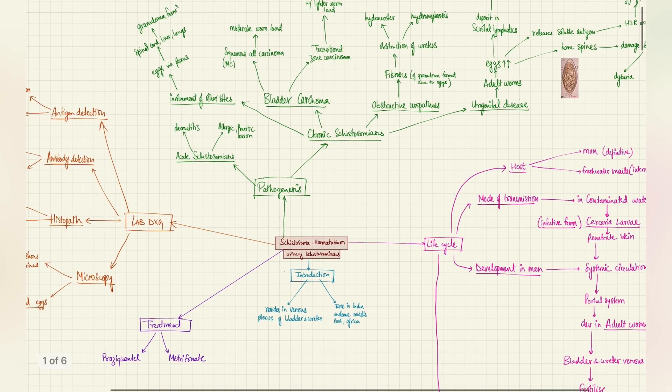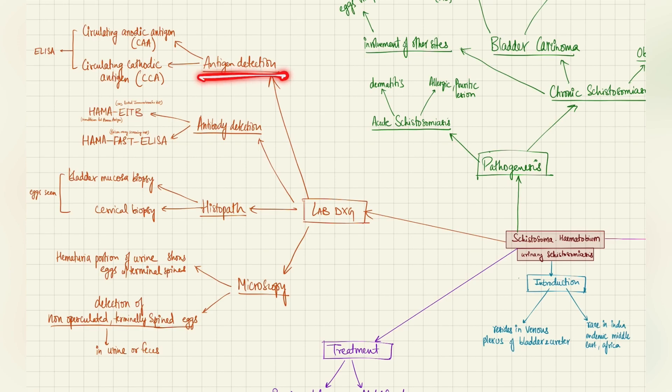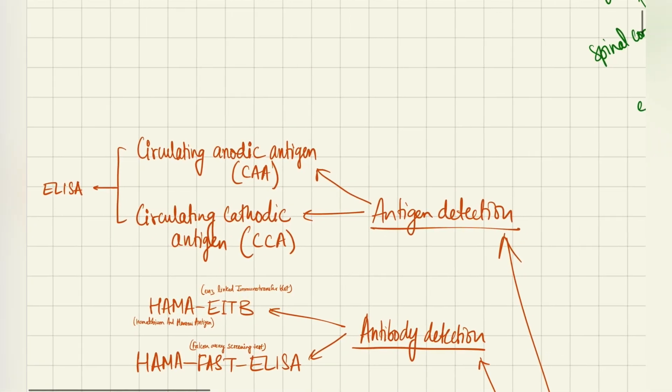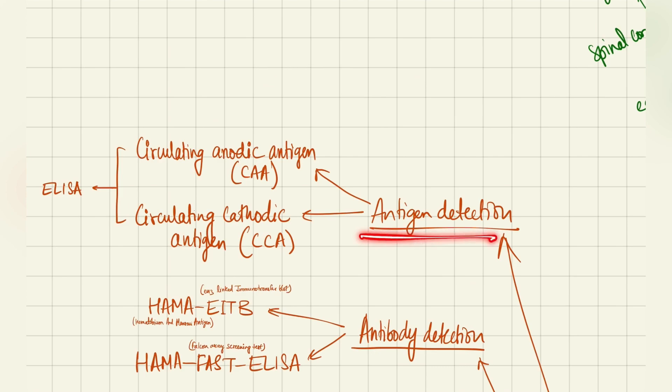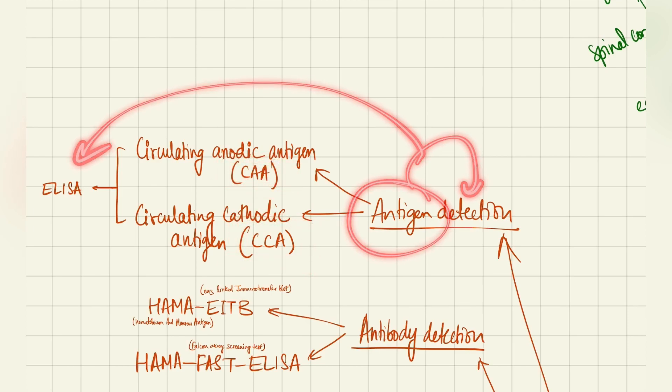After life cycle and pathogenesis, let's go to the lab diagnosis, the final most important aspect of microbiology. Here we'll talk about antigen detection, antibody detection, histopathology, and microscopy. Starting with antigen detection. The two most important antigens which are detected here are the CAA and CCA. These stand for the circulating anodic antigen CAA and circulating cathodic antigen. This is easy to remember: CAA anodic and CCA cathodic. Of course, these are antigen detections, so these are detected by ELISA.